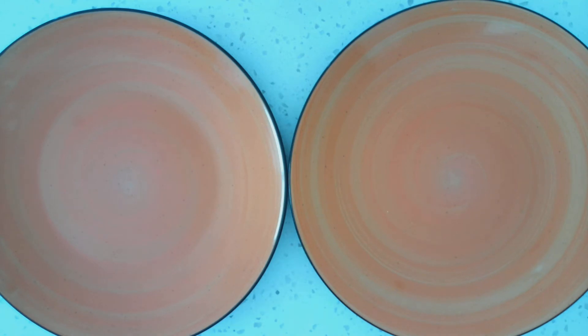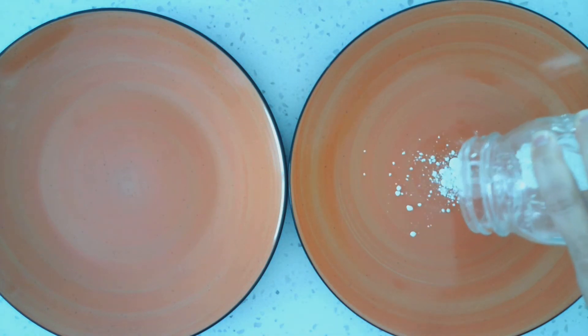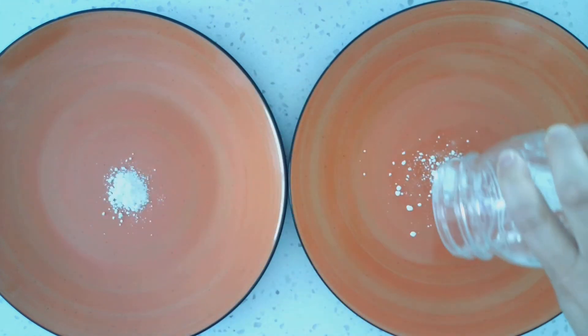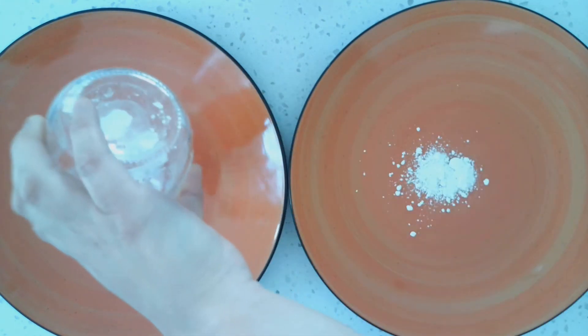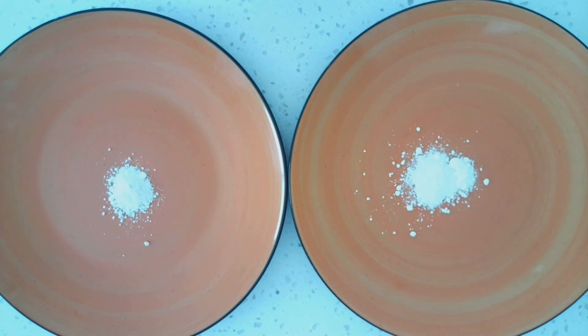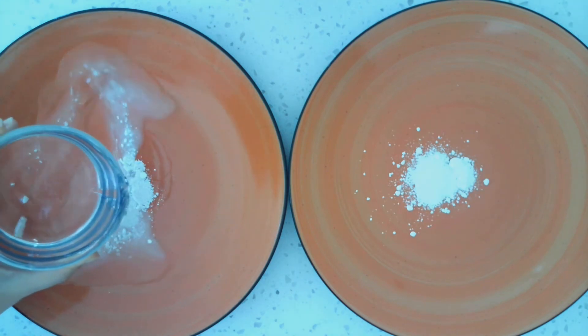So what you're going to do first is take your chalk and make two piles on your plate. Now what I want you to do is take your water, make sure it's your water, and pour it on your chalk pile.